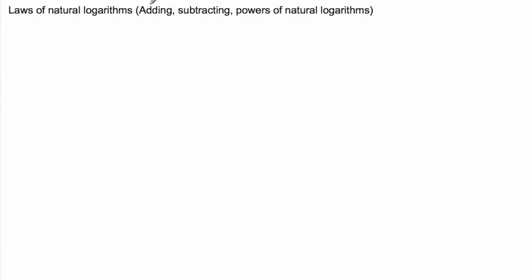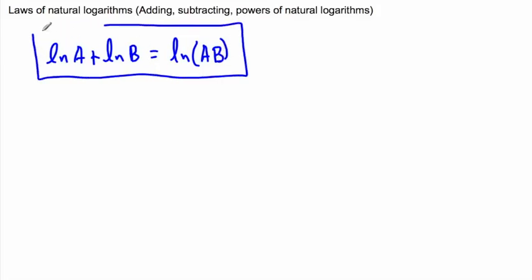So we have a rule for adding them. If we have the natural log of A plus the natural log of B, this is just like if you had log A plus log B - we have natural log of AB. This is the adding rule.